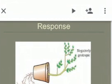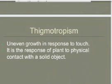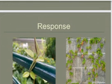Thigmotropism is uneven growth in response to touch — it is the response of the plant to physical contact with a solid object. When the plant gets in touch with any object, it turns its direction and moves around that object. The best examples are plants that grow on grills; they change their direction when they get in contact with a solid object.